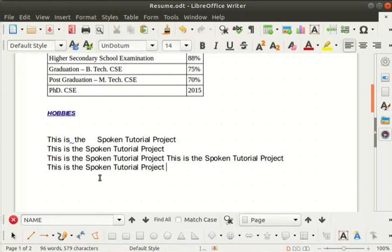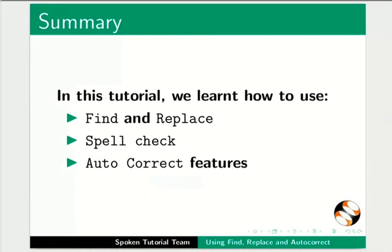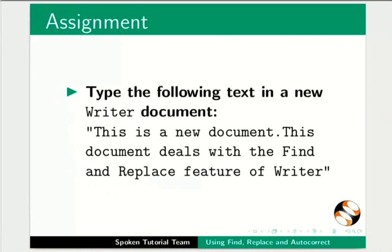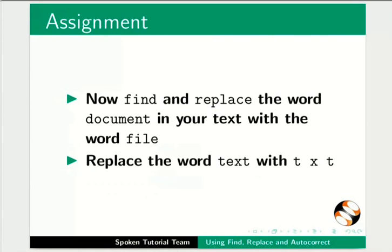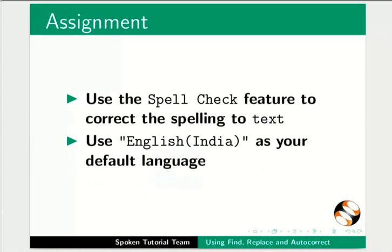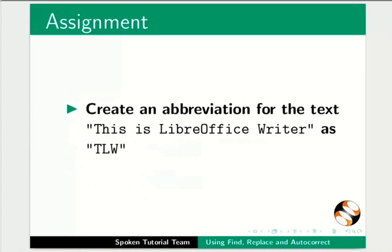Save the changes and close the file. This brings us to the end of this spoken tutorial. In this tutorial we learnt how to use find and replace, spell check, and autocorrect features. As an assignment, type the following text in a new Writer document. Find and replace the word 'document' with 'file', replace the word 'text' with 'TXT', use spell check to correct the spelling to TEXT, use English India as your default language, and create an abbreviation for 'This is LibreOffice Writer' as TLW.